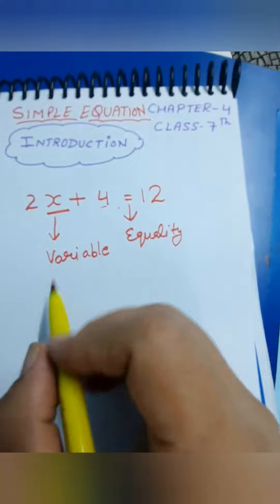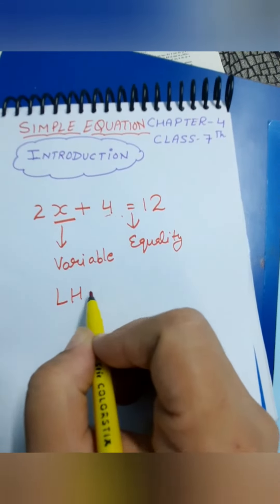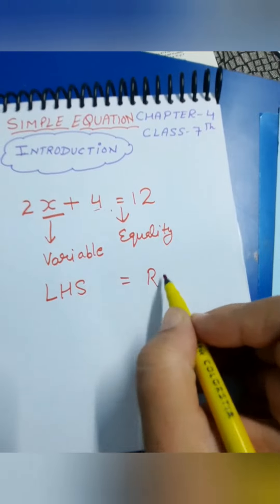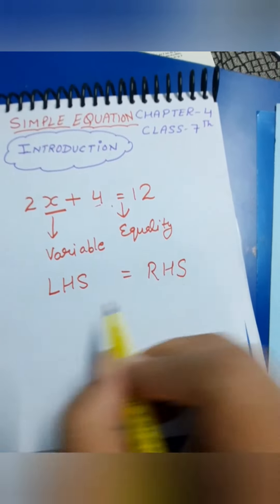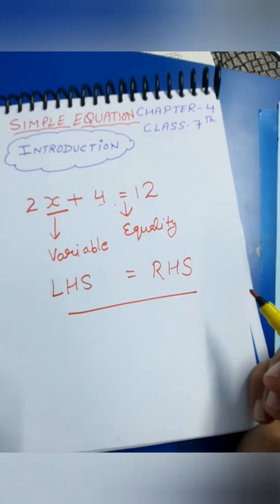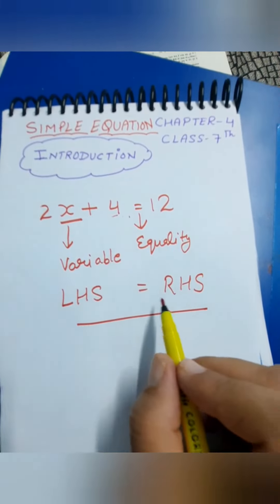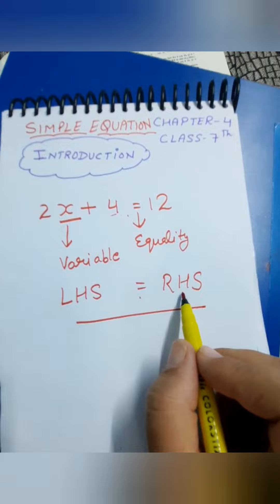This side is called left hand side and this side is called right hand side, okay? In a simple equation, left hand side is always equals to right hand side.